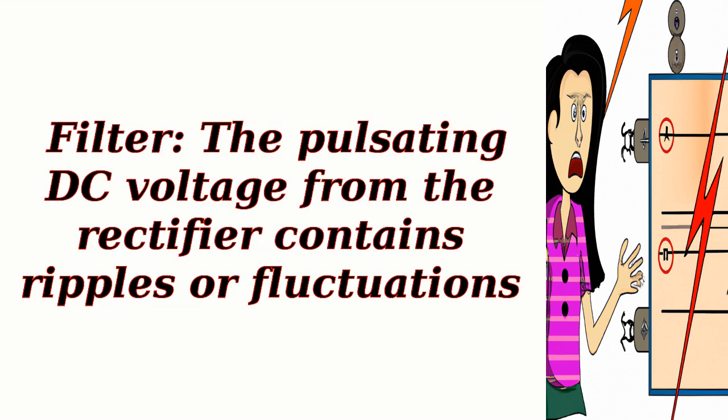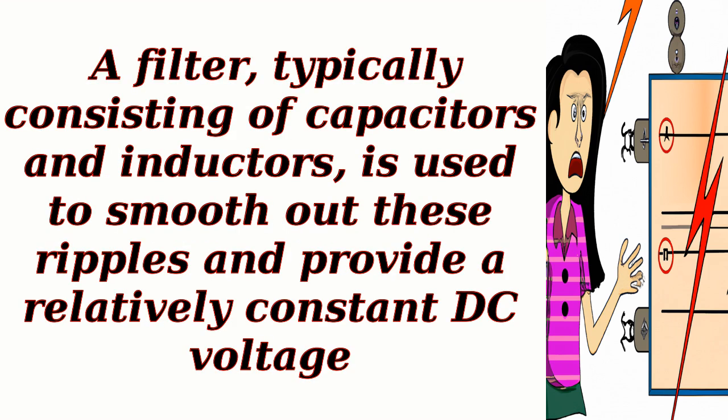Filter. The pulsating DC voltage from the rectifier contains ripples or fluctuations. A filter, typically consisting of capacitors and inductors, is used to smooth out these ripples and provide a relatively constant DC voltage.